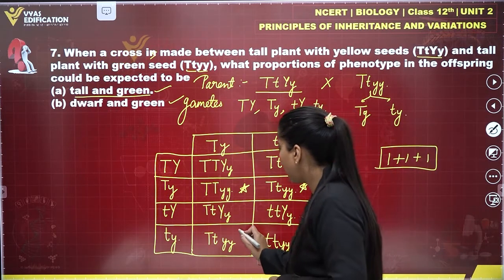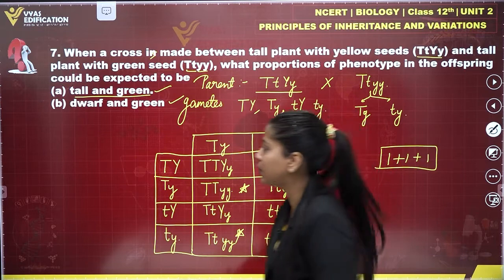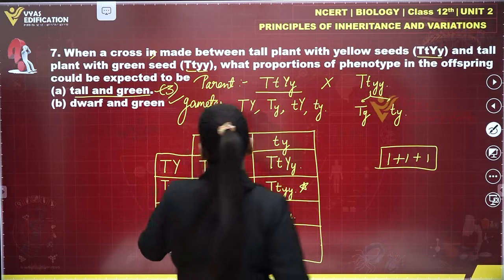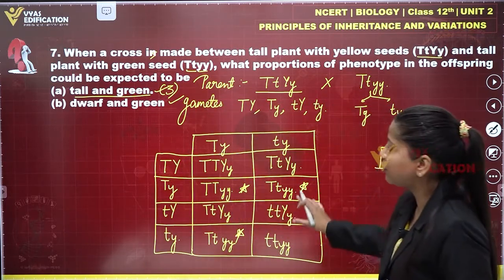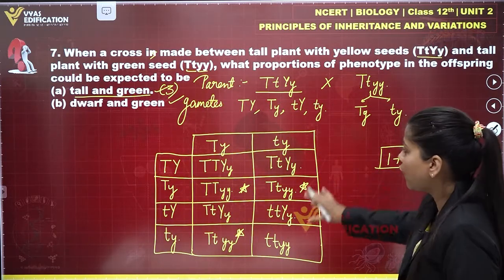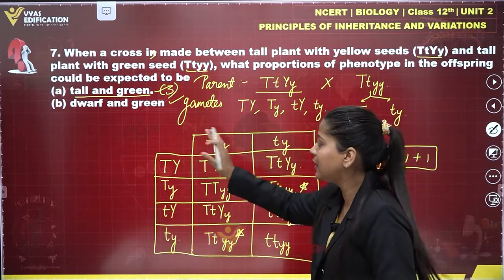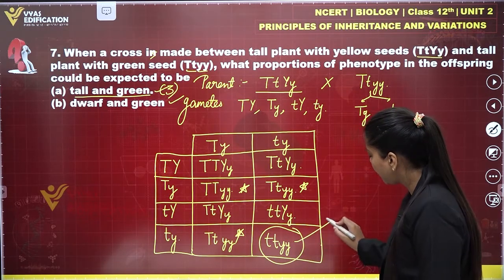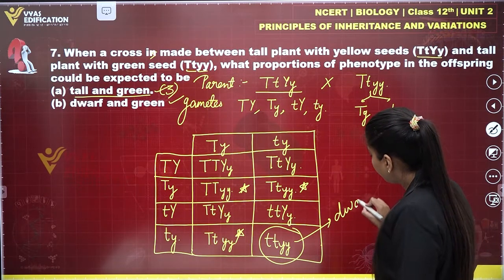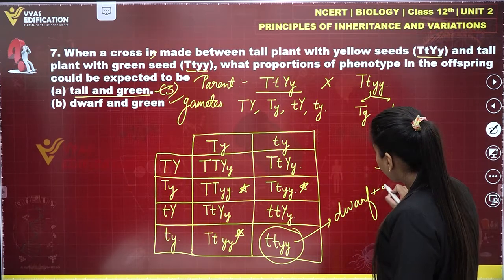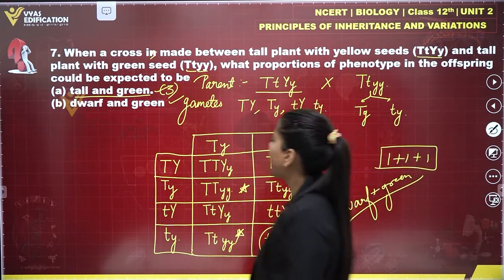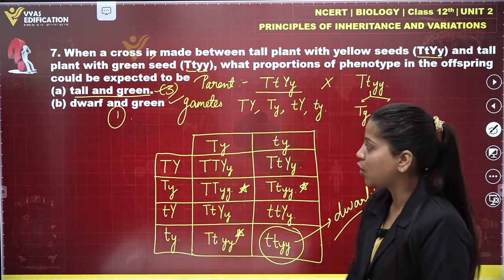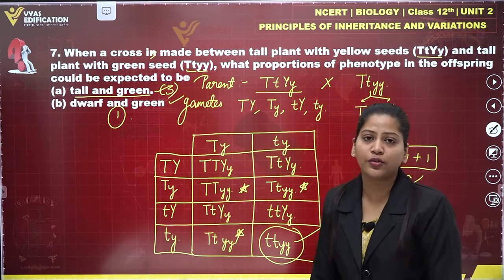So three out of the total offspring are tall and green. Similarly, for dwarf and green among all offspring: only one phenotype is showing dwarf and green. So the proportion is 3 tall and green to 1 dwarf and green among the offspring of this cross. This is the complete solution of question number seven.